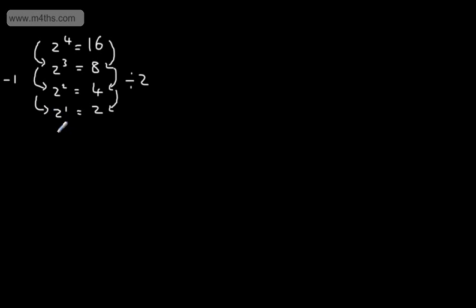Let's take this a step further and subtract another power. This gives me 2 to the power of 0. I need to divide this by 2 — 2 divided by 2 is 1, and this gives us a special result: any number other than 0 raised to the power of 0 gives us 1. So 3 to the power of 0 is 1, 5 to the power of 0 is 1, and 1,000,000 to the power of 0 is 1.